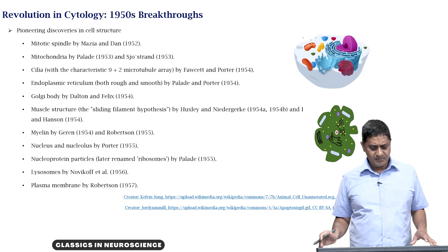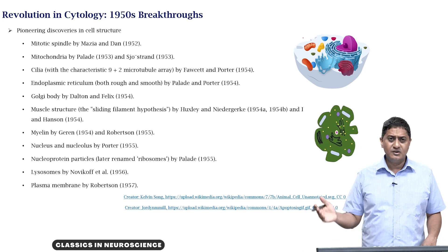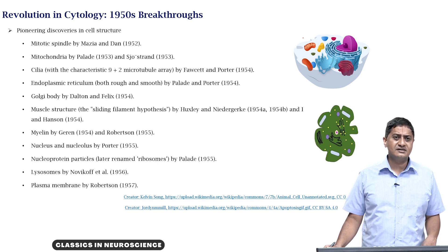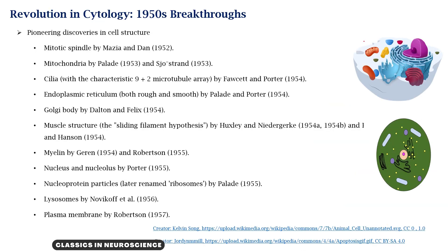To summarize these observations: the mitotic spindle was found by Massey and Dan; mitochondria by Pallet; cilia by Fawcett and Porter; endoplasmic reticulum by Pallet and Porter; Golgi body by Dalton and Felix; muscle structure by Huxley — specifically Niedergenk Huxley and Huxley and Hansen; myelin by Guerin and Robertson; nucleus and nucleolus by Porter; nucleoprotein particles and lysosomes by Pallet in 1955; lysosomes by Novikov; and plasma membrane by Robertson in 1957.